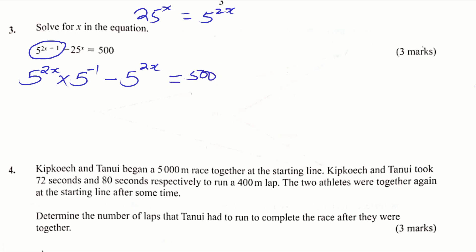Now the next thing you're going to do is to factorize. You notice that there's something that is common here. 5 raised to power 2x is common. So when you factorize that, 5 raised to power 2x, you remain here with 5 raised to power negative 1, then subtract 1, equals 500. When you open this bracket, automatically this one will take you there. Just factorizing.